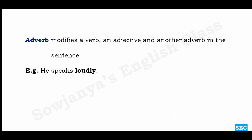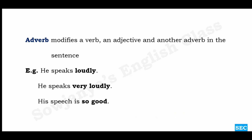For example: 'He speaks loudly.' 'He speaks very loudly.' 'His speech is so good.' In the first sentence, 'loudly' is the adverb modifying the verb. In the second, 'very' is an adverb modifying another adverb, 'loudly.' And 'so' is the adverb modifying the adjective 'good.' So this is what an adverb does — it modifies a verb, an adjective, and another adverb.